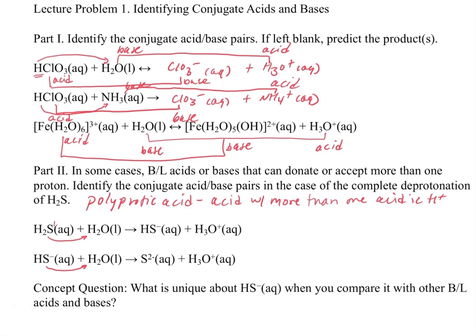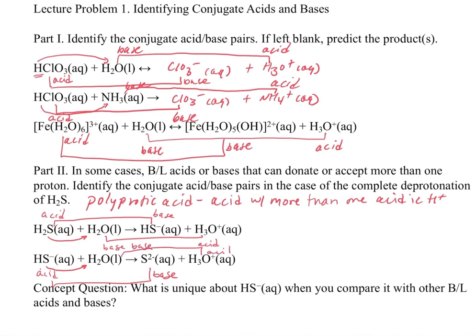In the first reaction, H2S acts as the acid, HS- is the conjugate base, and water acts as a base on the left and an acid on the right. In the second reaction, HS- acts as the acid, S2- is the conjugate base, and water again acts as a base on the left and, on the product side, as an acid.